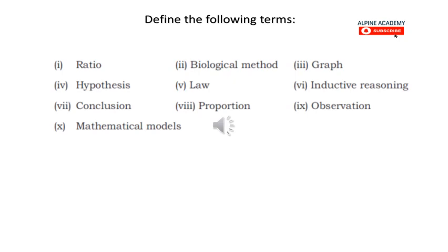Inductive reasoning: biologists collect information about a problem and formulate a hypothesis using a reasoning process. Inductive reasoning moves from specific to general. Conclusion: the final step of the scientific method is developing a conclusion — this is where all results from the experiment are analyzed and a determination is reached about the hypothesis. If the hypothesis was supported, great; if not, repeat the experiment or think of ways to improve the procedure.